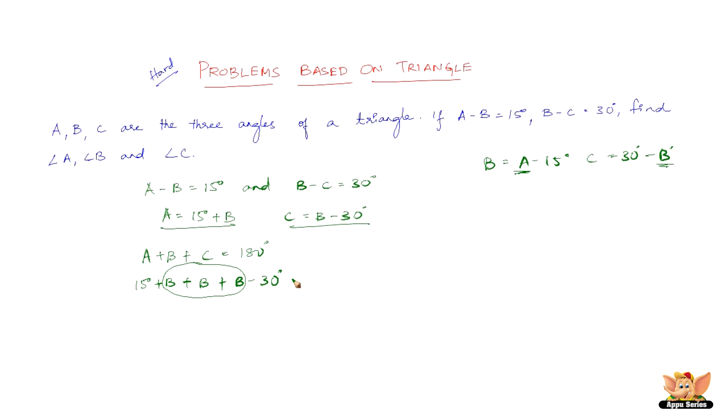Coming back to the problem, we have the sum of these equal to 180 degrees. 15 degrees plus 3B minus 30 degrees is equal to 180. 3B equals 180 degrees plus 30 minus 15, which is 195 degrees. So we have B equals 195 degrees by 3, which gives us B as 65 degrees.